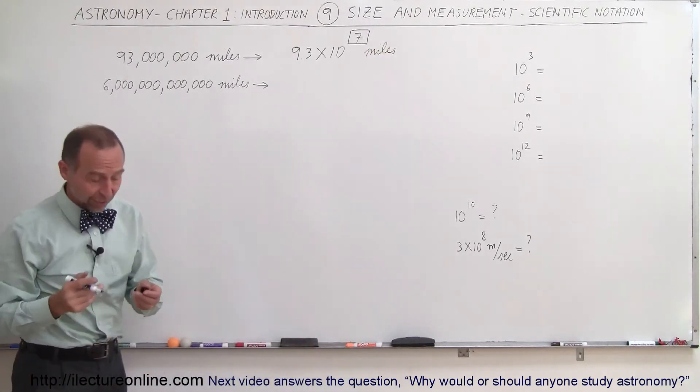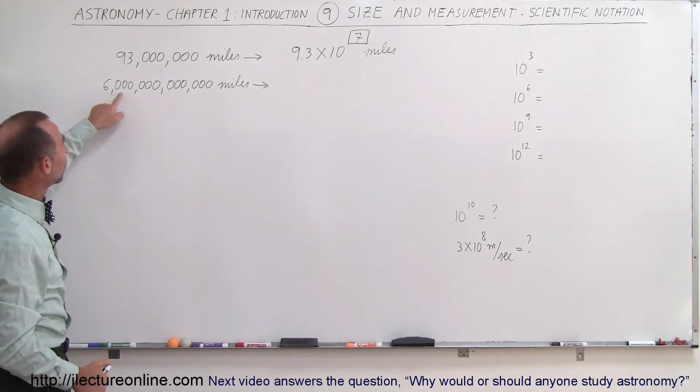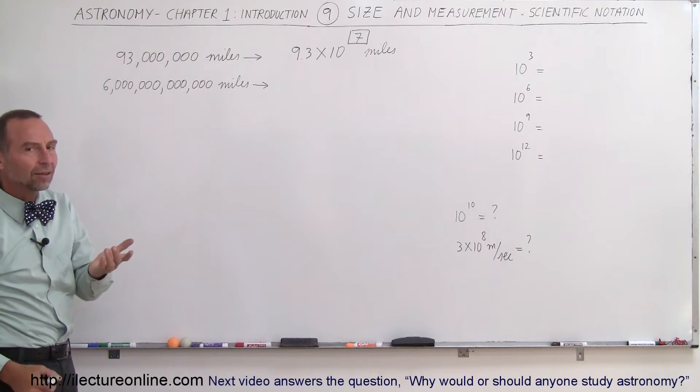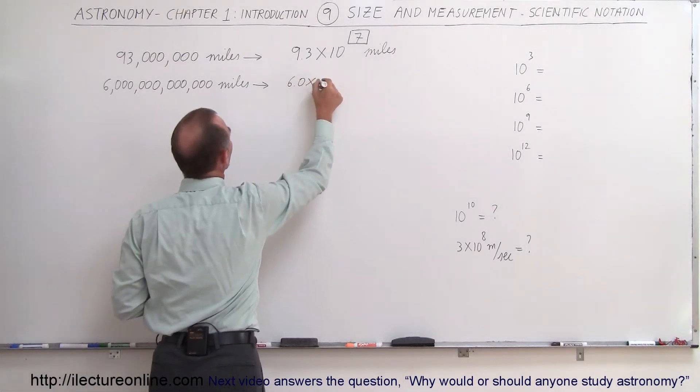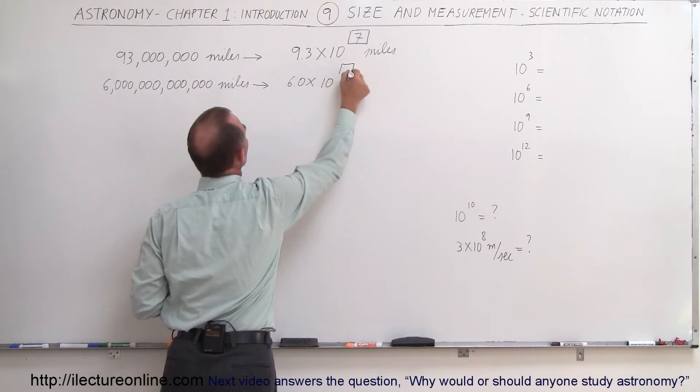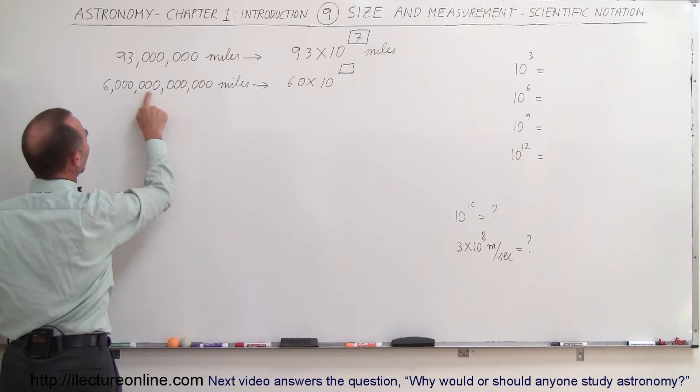How about the distance light travels in one year? It's about 6 trillion miles, and this is how we write it, 6 with 12 zeros. How do we write that in scientific notation? Write it as 6.0 times 10 to some exponent, and again we count the number of zeros past the 6. So 1, 2, 3, 4, 5,